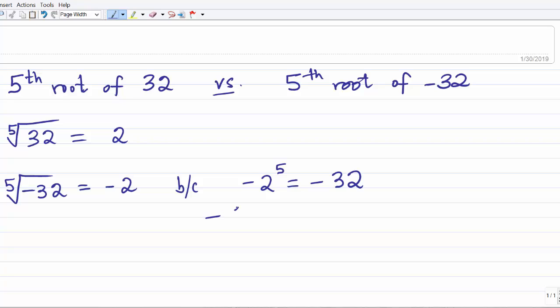Or if you want to verify that longhand, we multiply out negative 2 five times. This gives us 4, this gives us 4. 4 times 4 is 16. 16 times negative 2 is negative 32.